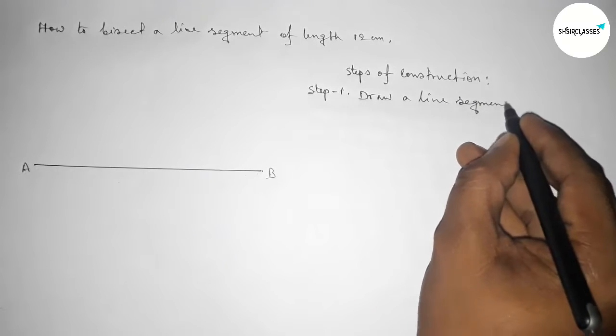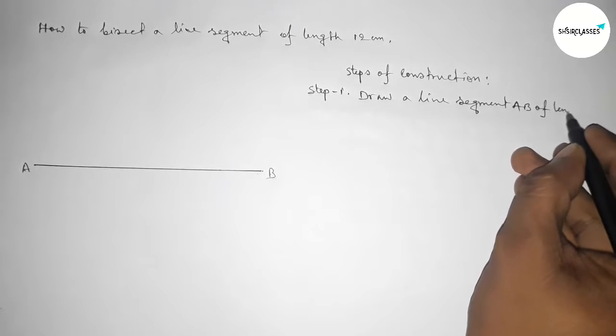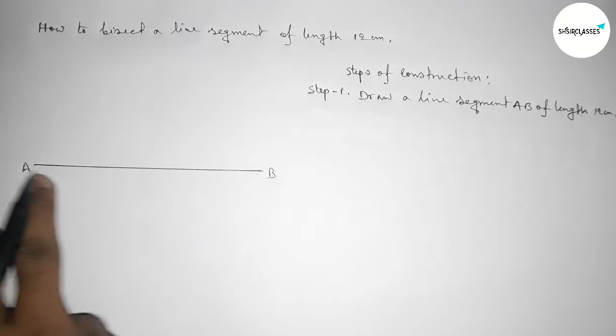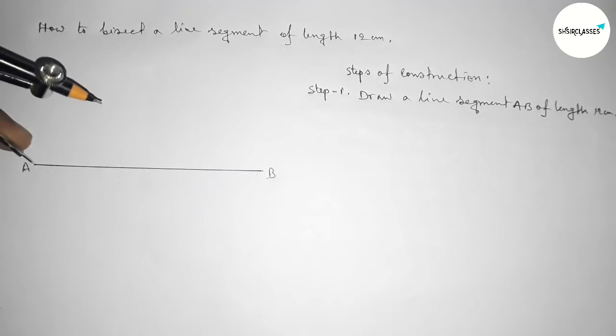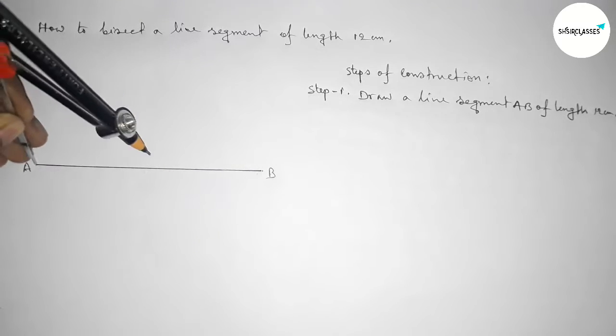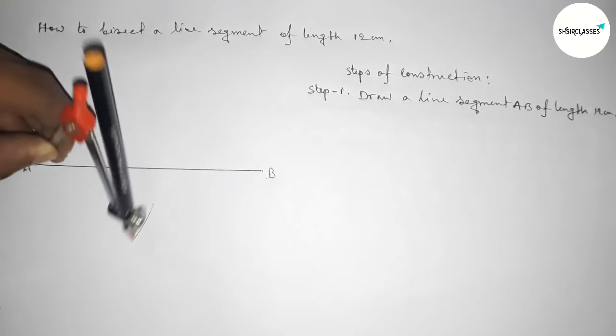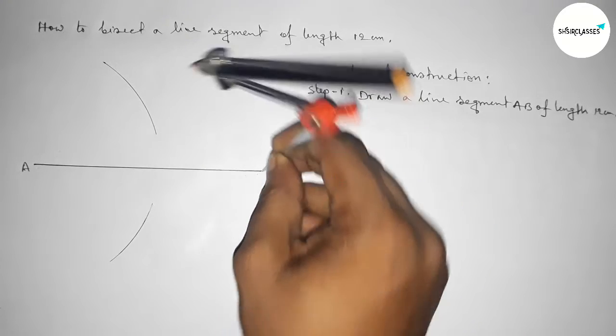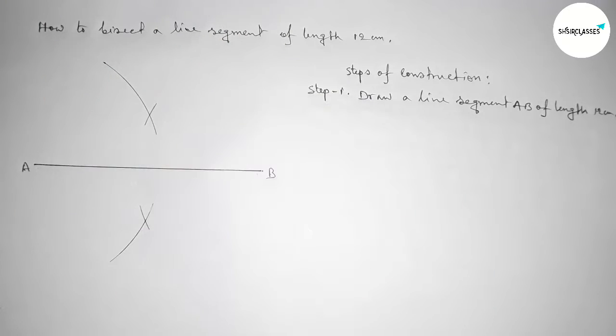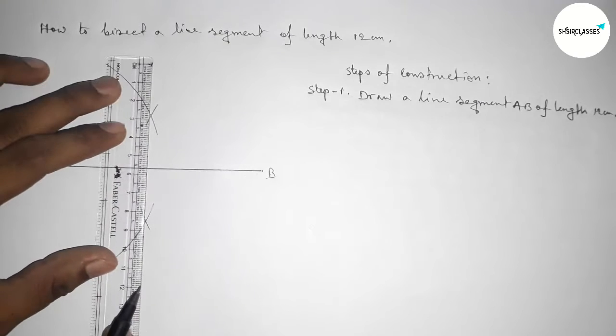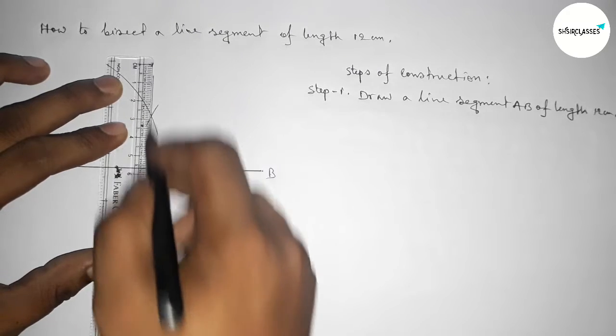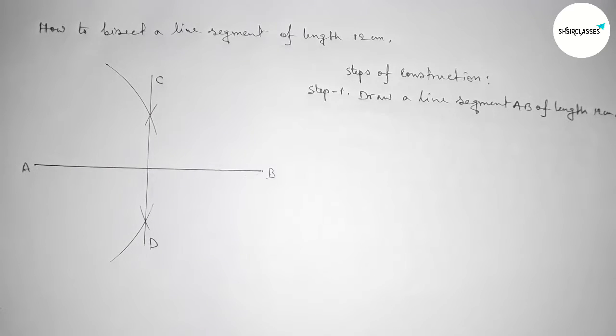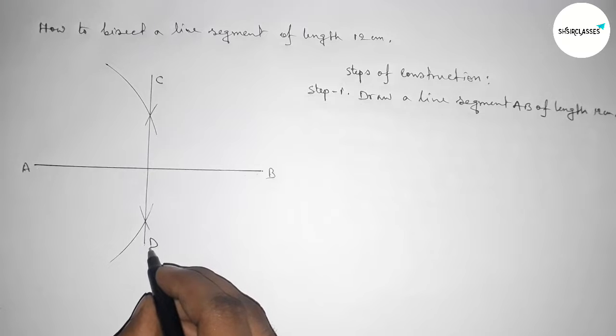Step number one: draw a line segment AB of length 12 centimeters by using scale. Next we bisect the line AB by putting the compass on point A and taking greater than half of AB, drawing arcs. Again with same length, putting the compass on point B and cutting here and here. Now joining this line, taking points C and D. The line CD bisects the line AB at point P.